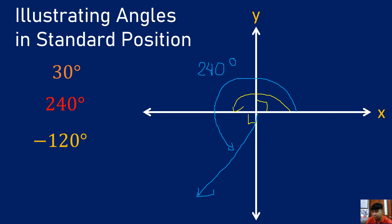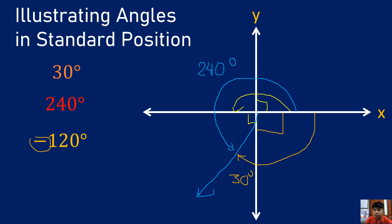What about negative 120 degrees? That is a negative angle, so the rotation must be clockwise. If this is 90 degrees, I need to add 30 more degrees to form that particular angle measurement. I start from the positive x-axis and stop here — the same terminal side as 240 degrees. Because 240 degrees still needs 30 more degrees to form 270, and for negative 120 degrees, this is already 90 degrees clockwise, so it needs 30 more to form negative 120 degrees. The negative sign means the rotation is clockwise.